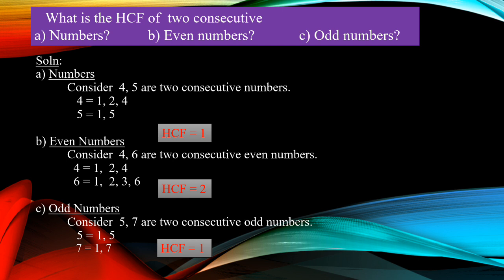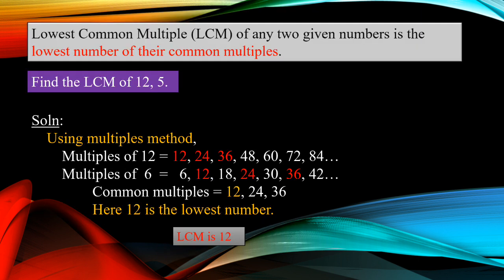You can use both methods: the common factor method, or the prime factorization method. Next heading: Lowest Common Multiple. The lowest common multiple of any two given numbers is the lowest number of their common multiples. It is the opposite of HCF — in HCF we chose the highest number of common factors, here we take the lowest of common multiples. Steps: find multiples, then common multiples, and at last the lowest common multiple.